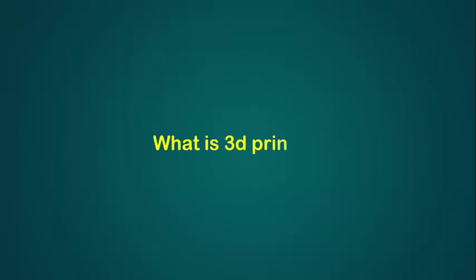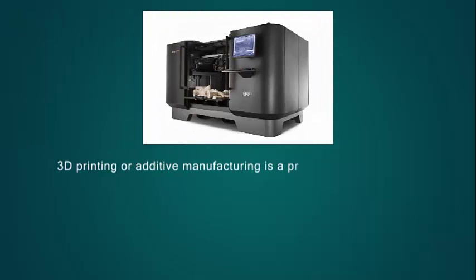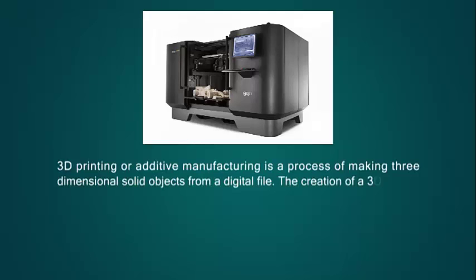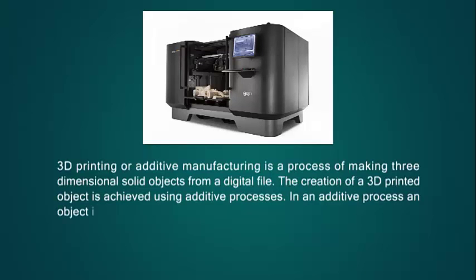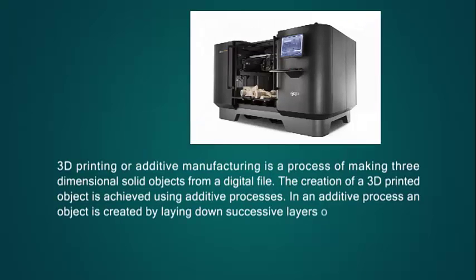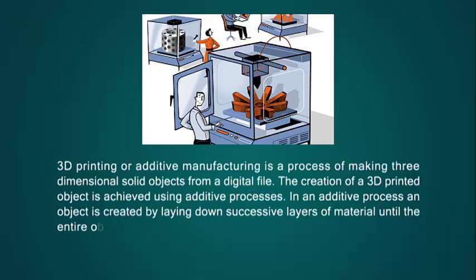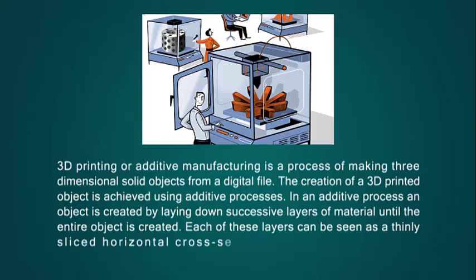3D Printing, or Additive Manufacturing, is a process of making three-dimensional solid objects from a digital file. The creation of a 3D printed object is achieved using additive processes. In an additive process, an object is created by laying down successive layers of material until the entire object is created. Each of these layers can be seen as a thinly sliced horizontal cross-section of the eventual object.